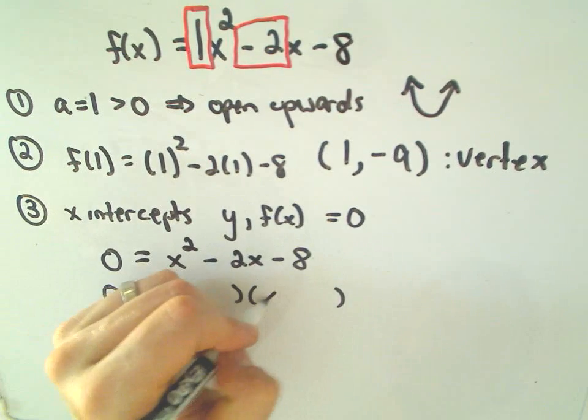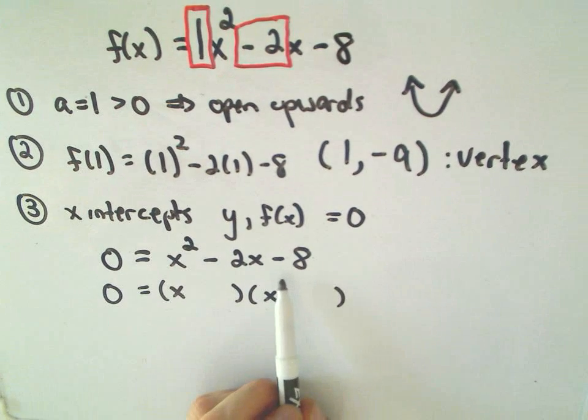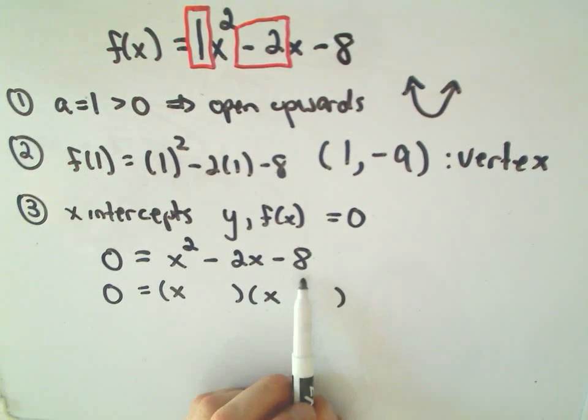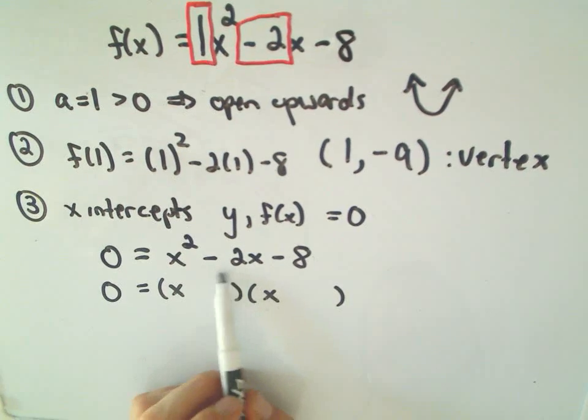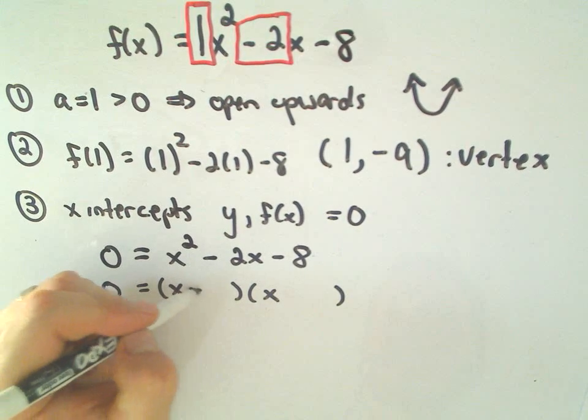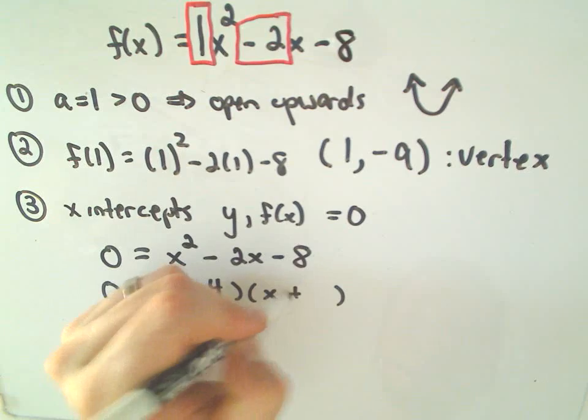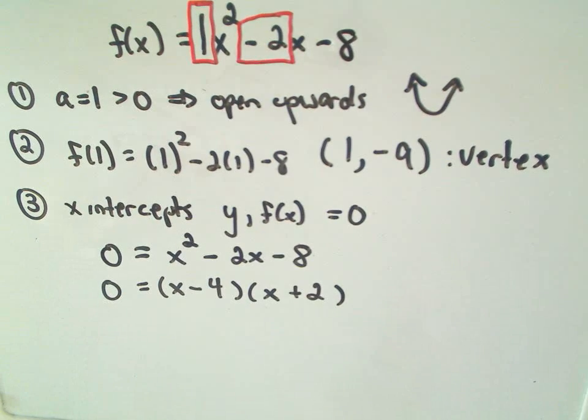So to get x², we'll need x and x. Okay, so now I look for two numbers that multiply to negative 8, but add up to negative 2. How about negative 4 and positive 2? I believe that will work.